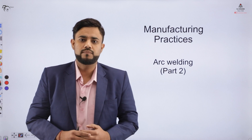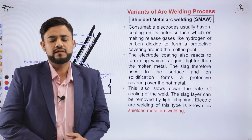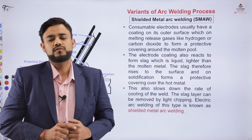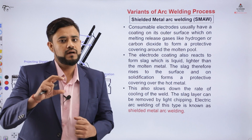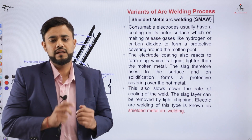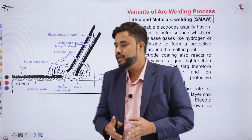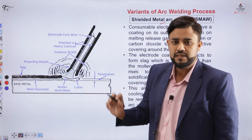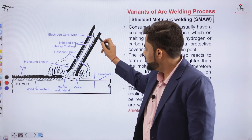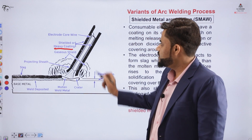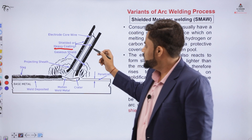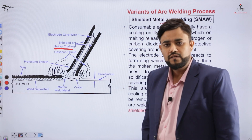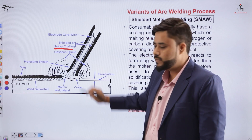Let's start with the variants of arc welding processes. The electrode is momentarily struck on the surface of the workpiece and the flow of electrons occurs across the gap between the workpiece and the electrode. The first variant is shielded metal arc welding. In SMAW it is somewhat similar to basic arc welding, but here the electrode has a heavy coating on its surface.